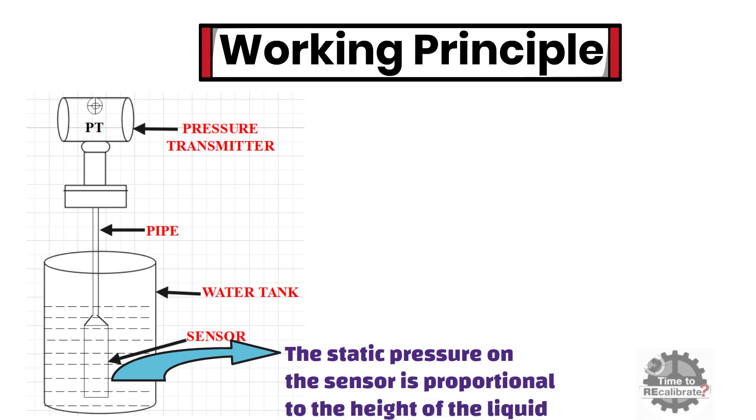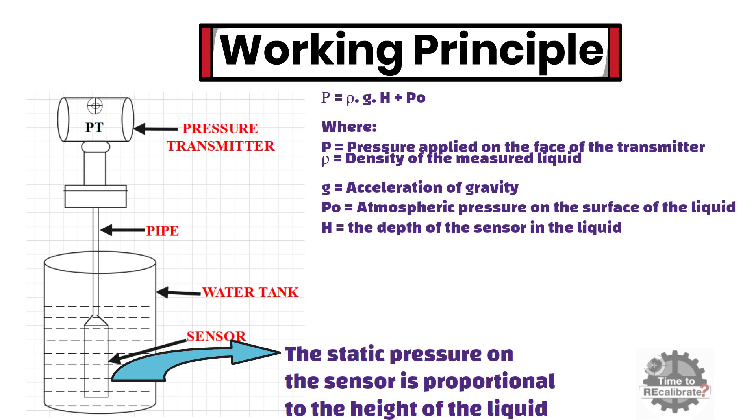For example, when the liquid level sensor is placed at a certain depth in the liquid level to be measured, the pressure is applied on the front face of the sensor. As you can see in this equation, rho is the density of the measured liquid, g is the acceleration of gravity, H is the depth of the transmitter in the liquid, and P0 is the atmospheric pressure on the surface of the liquid.